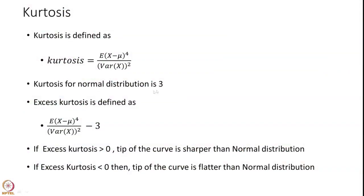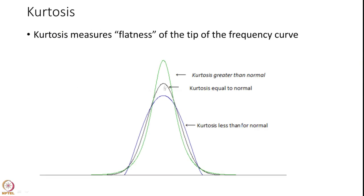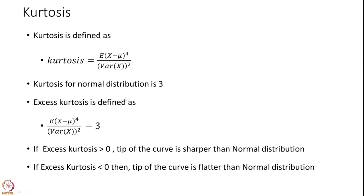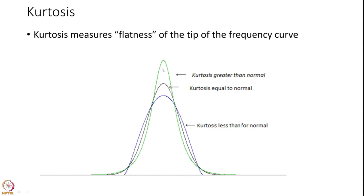Kurtosis for a normal distribution is always 3 — that is the black line representing the perfectly normal curve. There is also another definition called excess kurtosis, in which you take this measure of kurtosis and subtract 3 from it. If the excess kurtosis is greater than 0, the tip of the curve is sharper than the normal distribution. If the excess kurtosis is smaller than 0, the tip of the curve is flatter than the normal distribution.